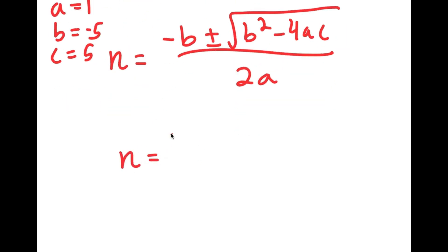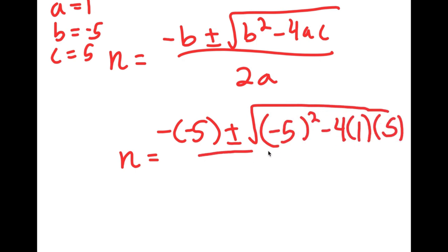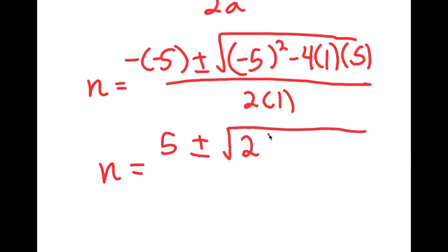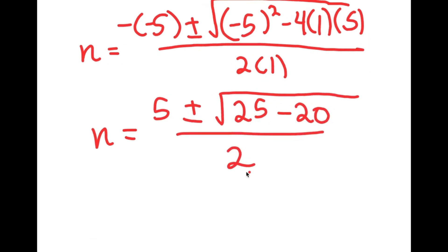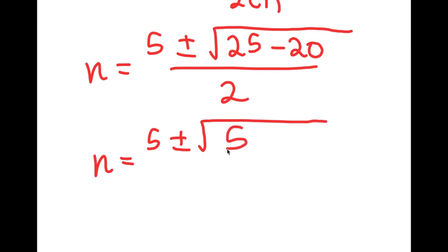So I get n is equal to negative of negative 5 plus or minus the square root of negative 5 squared minus 4 times a, which is 1, times c, which is 5, all over 2 times 1. This is equal to positive 5 plus or minus the square root of 25 minus 4 times 5, which is 20, all over 2, which equals 5 plus or minus the square root of 5 over 2.